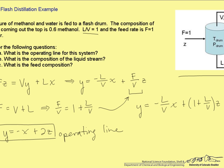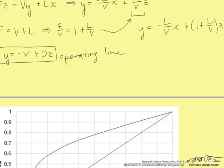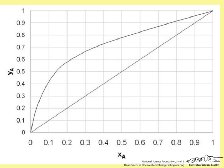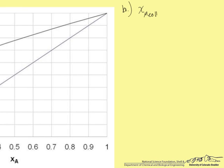For part B, we will use our graph of the equilibrium data. We are told in the problem that we need to find the composition of the liquid stream. So in other words, we are trying to find X of methanol. We are told that Y, the composition of methanol in the vapor stream, is equal to 0.6.